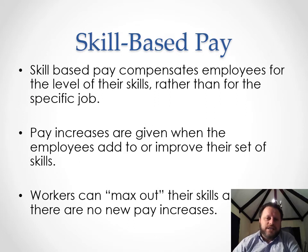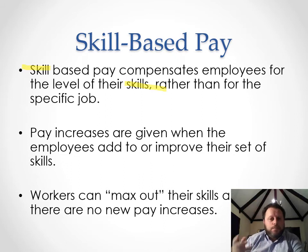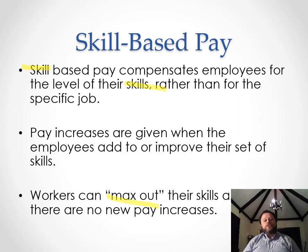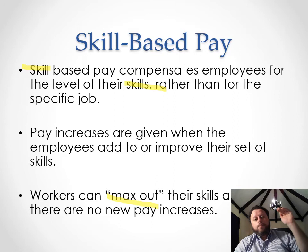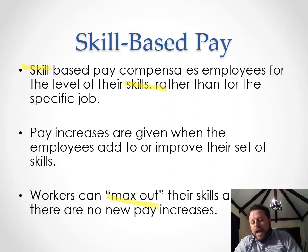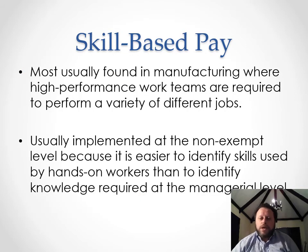Skill-based pay is very similar to single pay rate — every time you get a new set of skills, you step up in pay. The problem is you can max out: once you've learned every skill at the Ford factory, going from $10 to $12 to $14 to $20, there are no more skills to learn and no more raises. This is usually found in manufacturing.